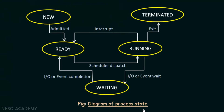Here we have a diagram showing all the process states we just studied. First of all we have the new state — here the process is being created. After the process is created it is admitted and comes to the ready state, where it is ready to begin execution and waiting to be assigned a processor. The scheduler then dispatches it to the processor, and when it begins its execution it is in the running state — when the instructions in that process are being executed.